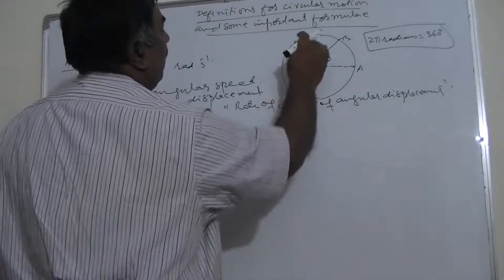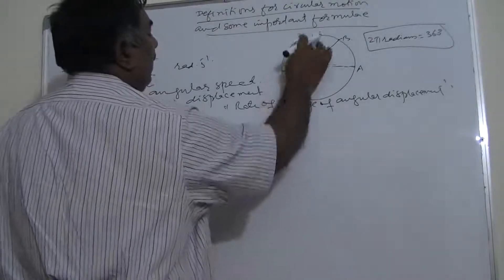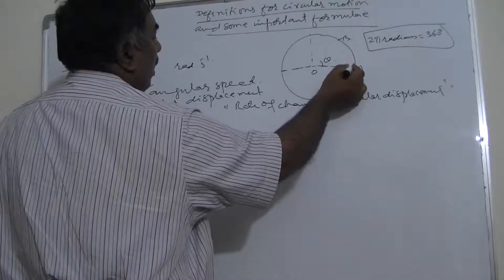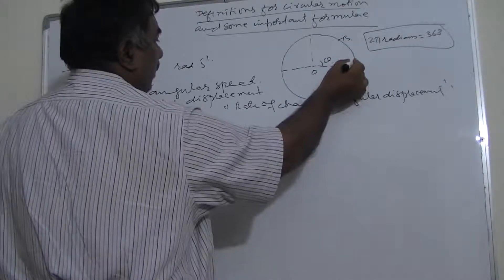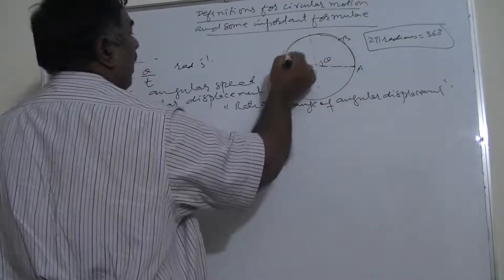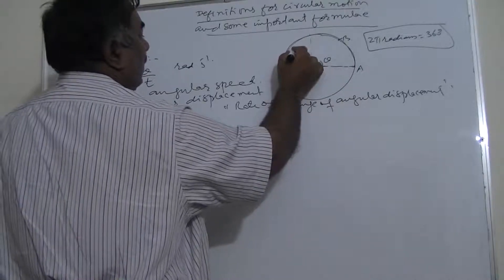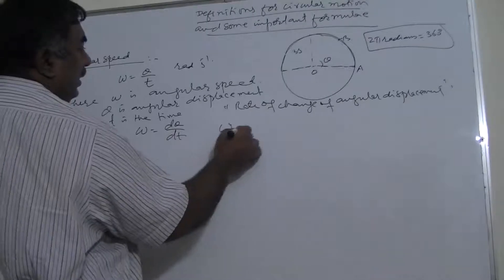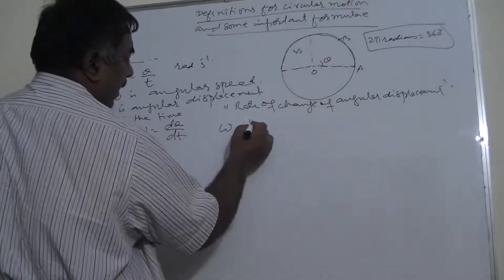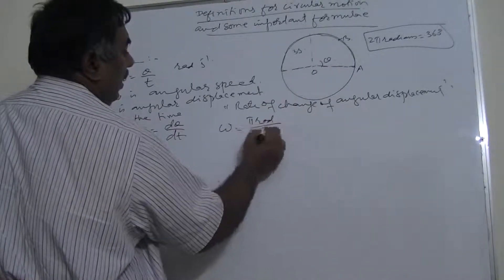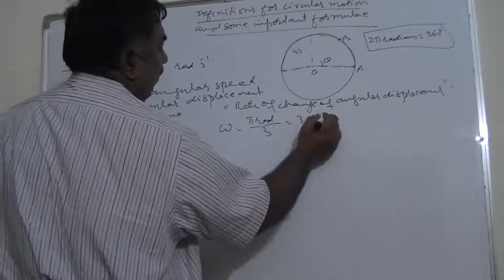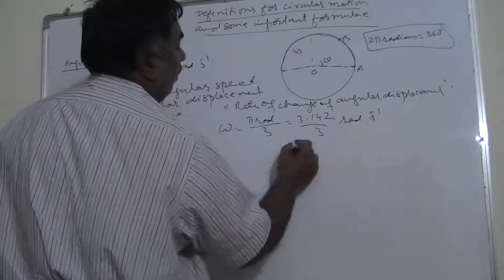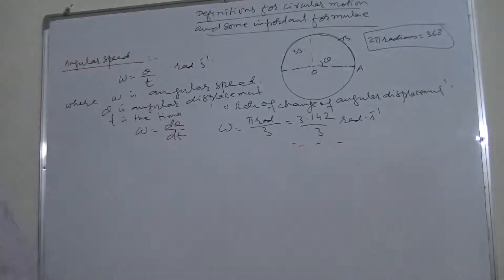For example, 180 degrees is π radians. If a body moves through 180 degrees and takes 3 seconds, then its angular speed is π divided by 3, or approximately 3.142 divided by 3 radians per second. That is how we calculate angular speed.